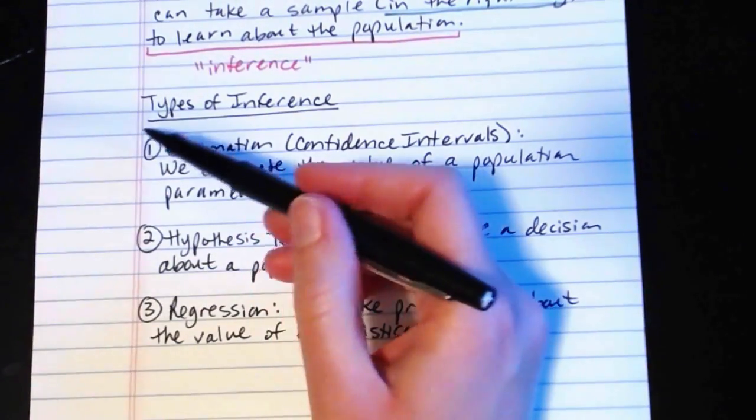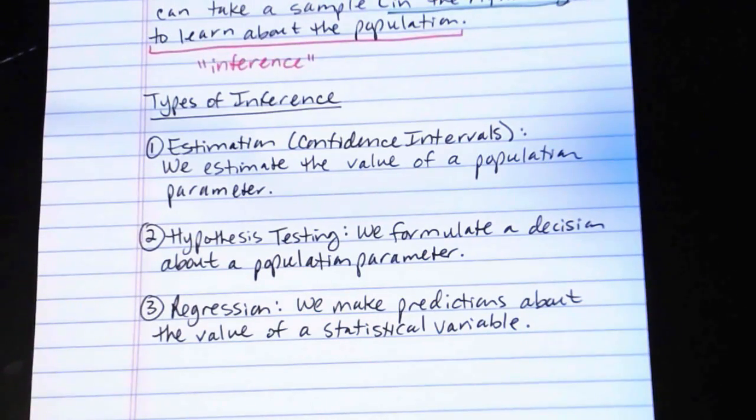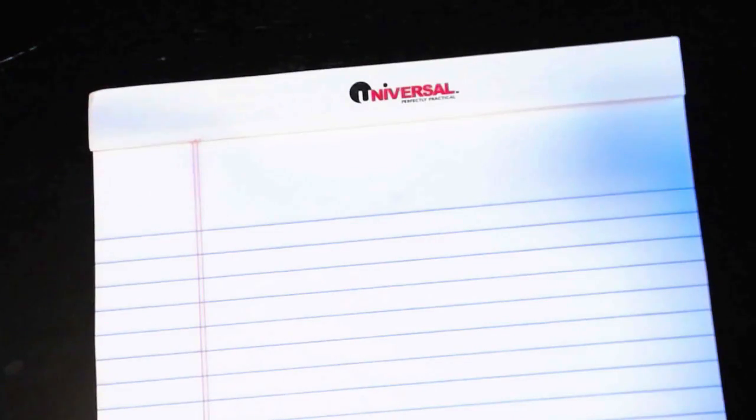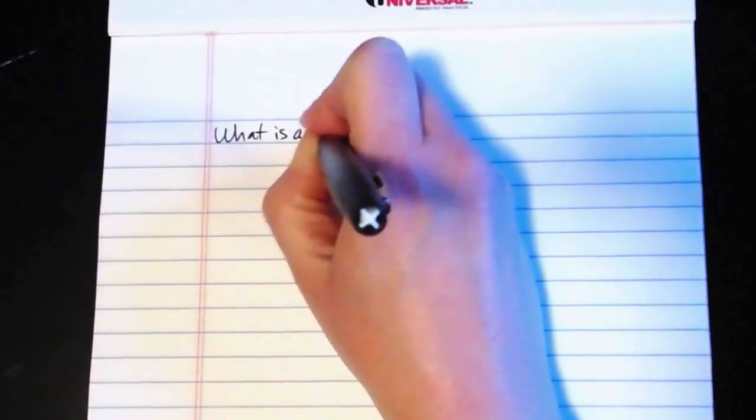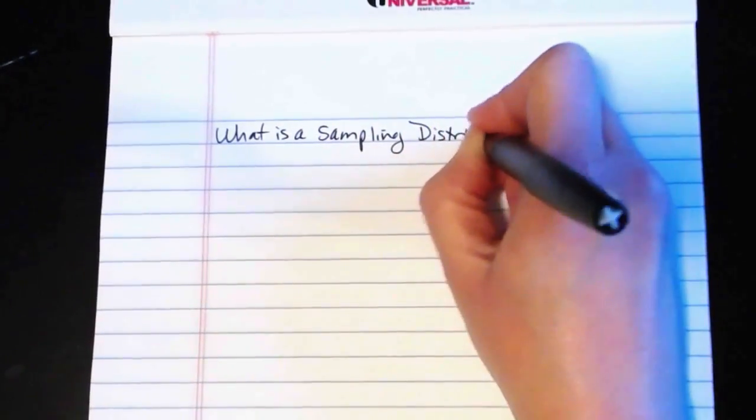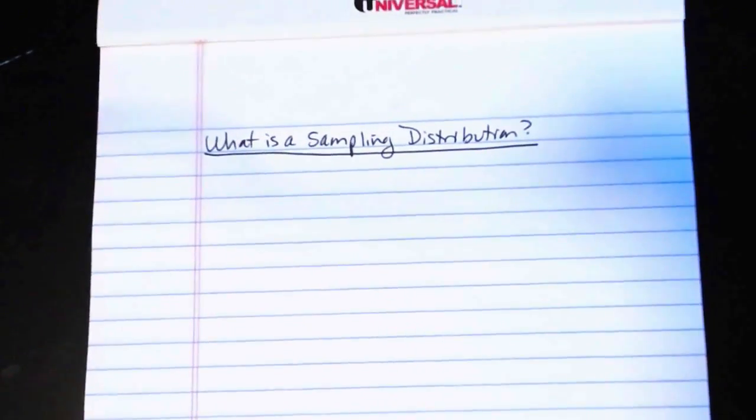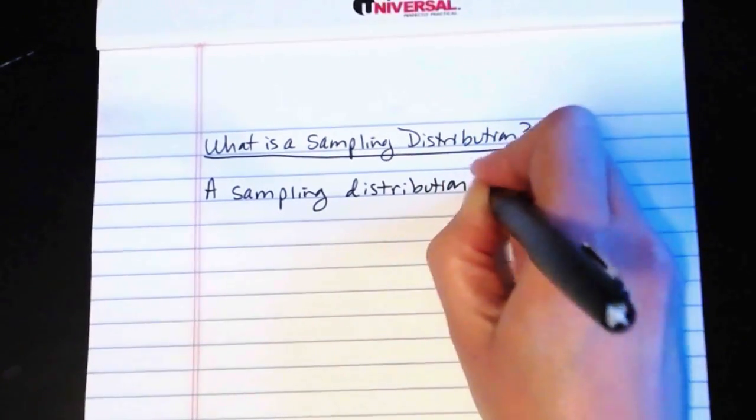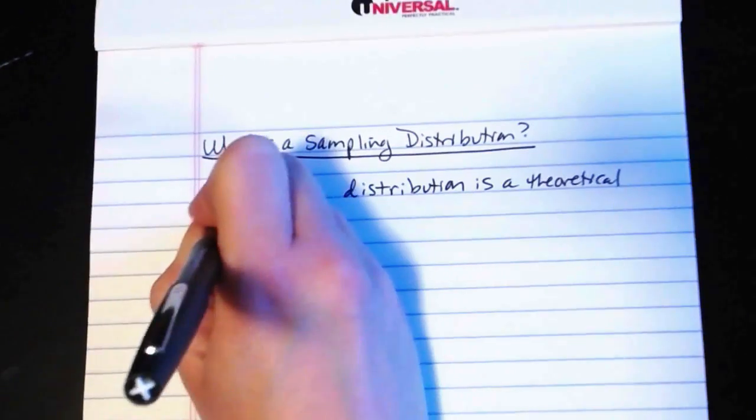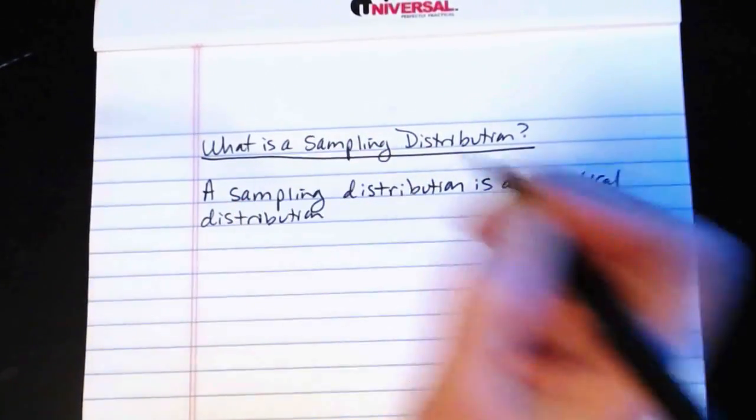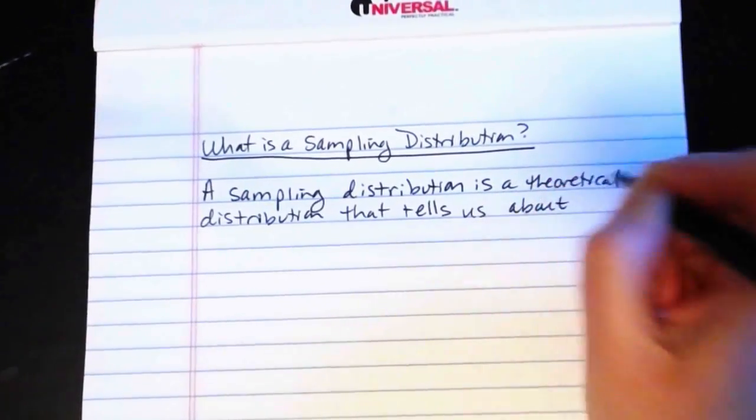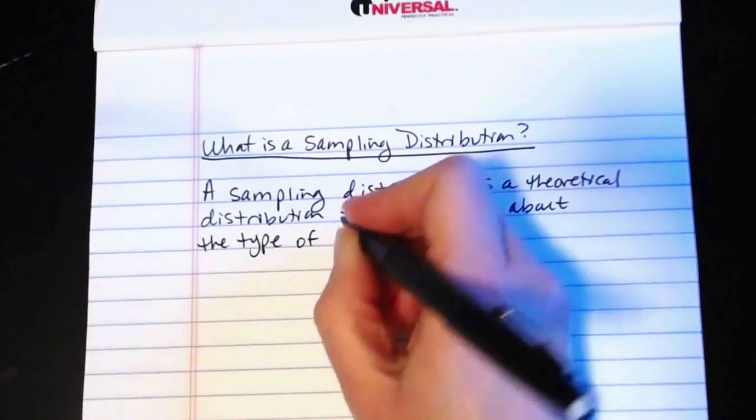Now all of these types of inference are based on the notion of a sampling distribution. To do inference, we need to make use of this sampling distribution concept. So we want to talk about what is a sampling distribution, and then I will make, again, a separate video showing you a simulation of one. Okay, so what is a sampling distribution? A sampling distribution is a theoretical distribution that tells us about the type of probability distribution.